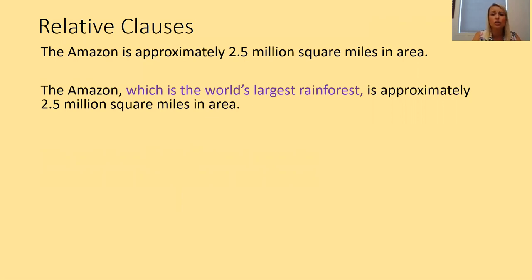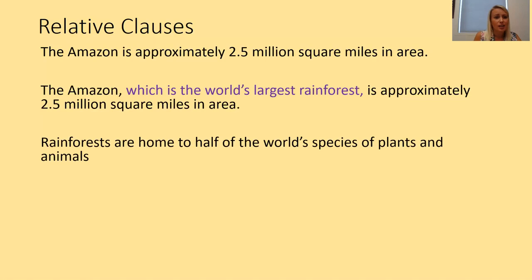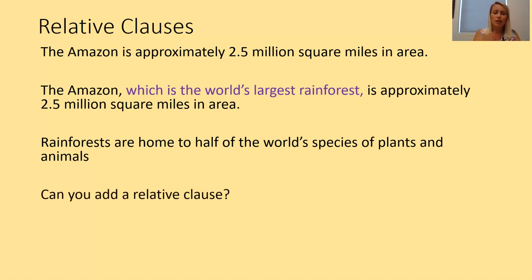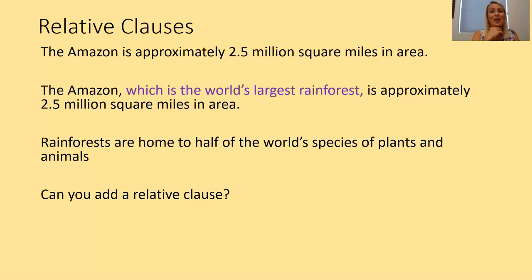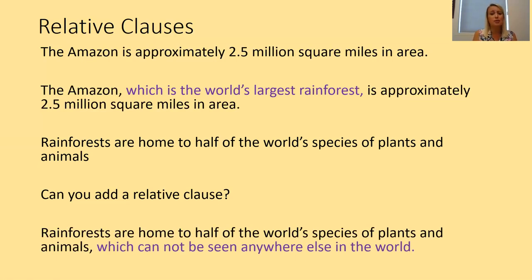Let's look at another example: 'Rainforests are home to half of the world's species of plants and animals.' I wonder where you think a relative clause could be added — which noun is going to be modified? Pause the video and see if you can add a relative clause. Here is an example: 'Rainforests are home to half of the world's species of plants and animals, which cannot be seen anywhere else in the world.' The relative clause comes after the nouns 'plants and animals', using the relative pronoun 'which'.